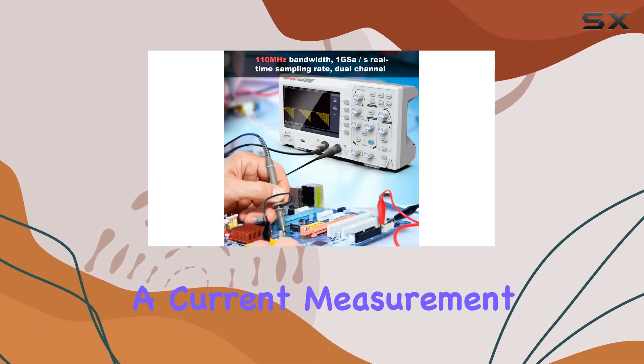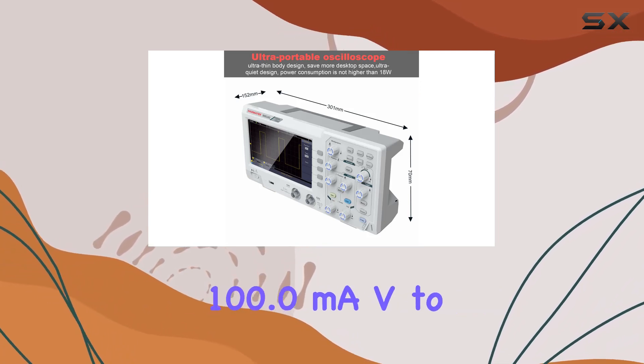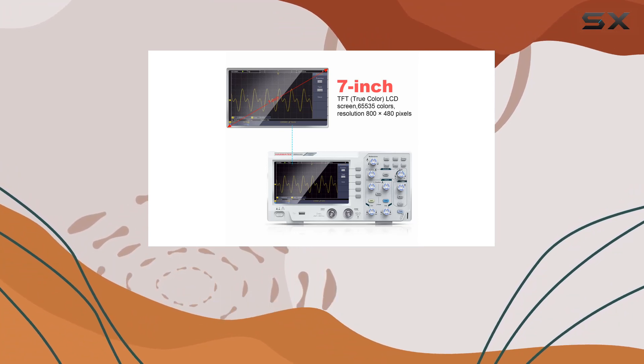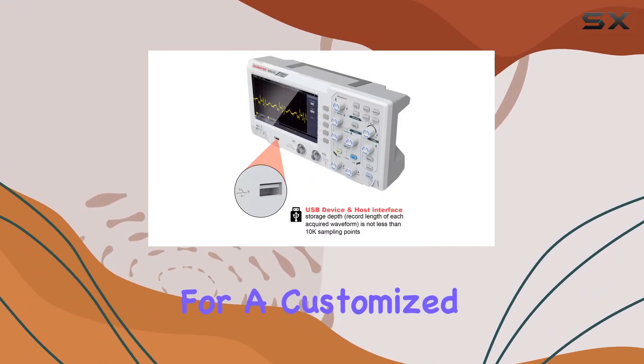Additionally, it features a current measurement function with a range from 100.0 mAV to 1KV. The device supports 30 automatic measurement functions, allowing for a customized measurement menu.